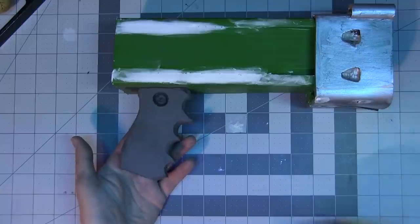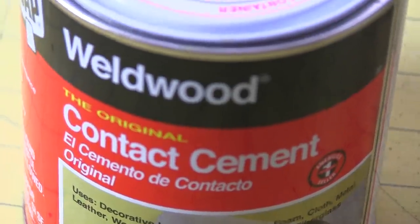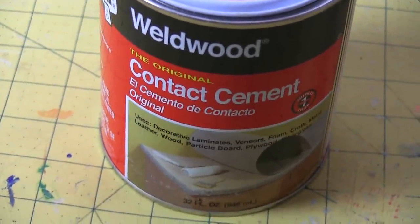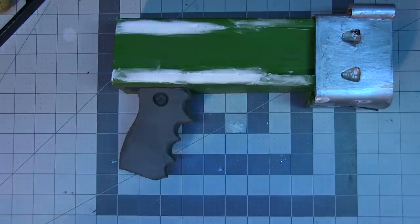Next, I made a handle out of EVA foam and contact cemented it to the barrel. Yeah, that one I actually did contact cement. And you'll notice that I cleaned up some of the seams there because I've gotten a little bit better at seams since then.